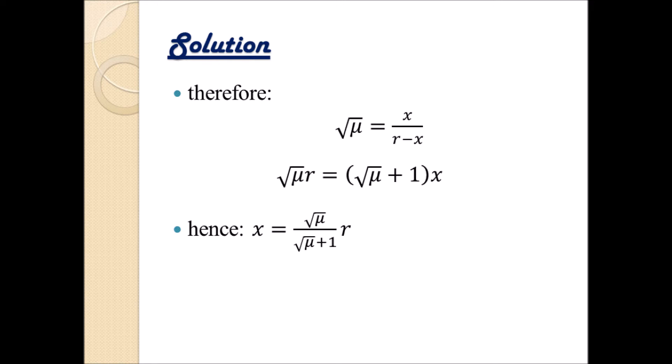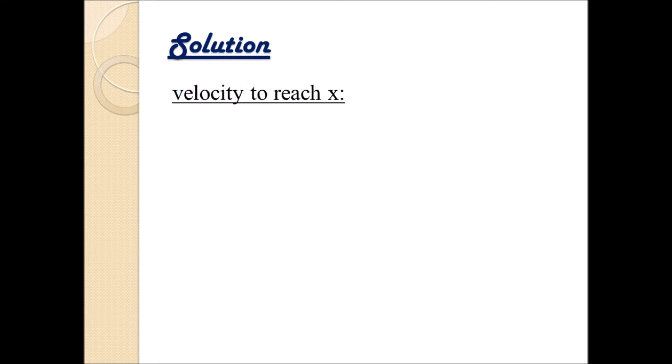What we get is x equals 346,024 kilometers, which is actually nowhere near Earth. This makes sense, because Earth has a much larger mass than the Moon and its gravitational field is therefore much stronger — so this equilibrium point has to be much closer to the Moon than to the Earth. But we're not done yet, because we also need to find the velocity required to reach this point.